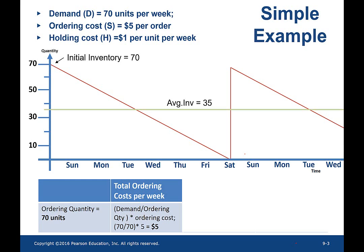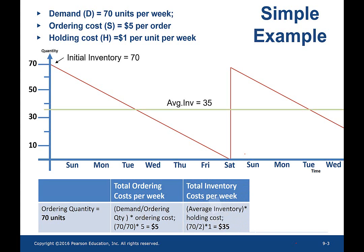If you look at the ordering cost incurred by the buyer in a given week, it's $5 because the buyer orders only once a week — 1 times 5 is $5. The average inventory is half of the ordering quantity: half of 70 equals 35. The total inventory holding cost is average inventory times the holding cost, which is $35. Adding both costs, the total cost per week is $40.